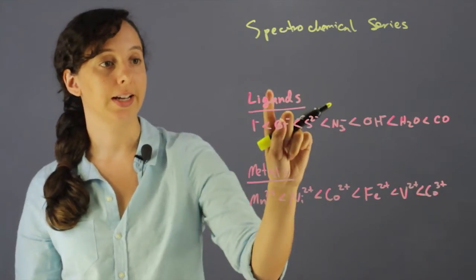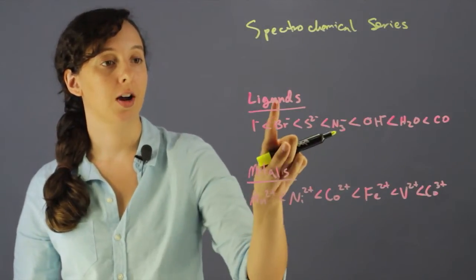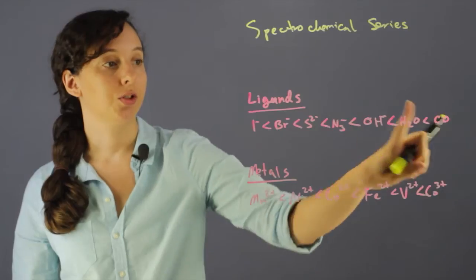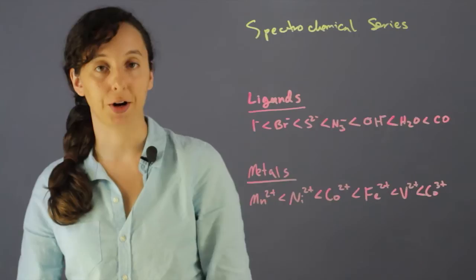It's a list of ligands and a list of metals. They're arranged from weakest to strongest, and for the metals they're arranged by oxidation number and by group.